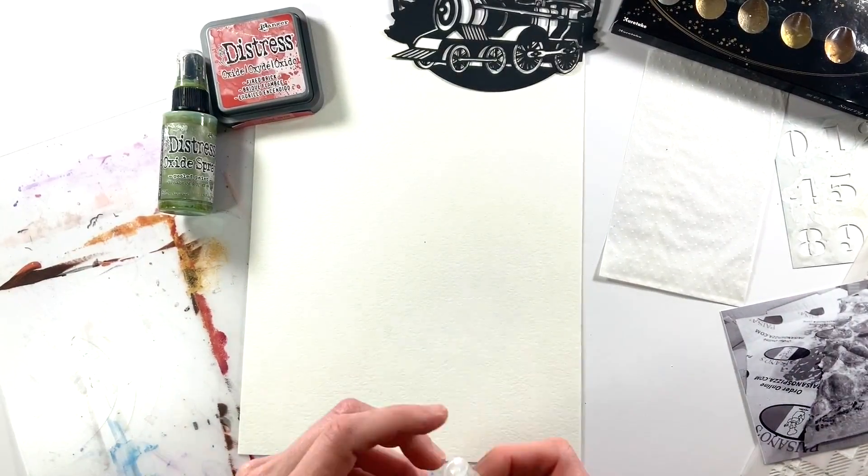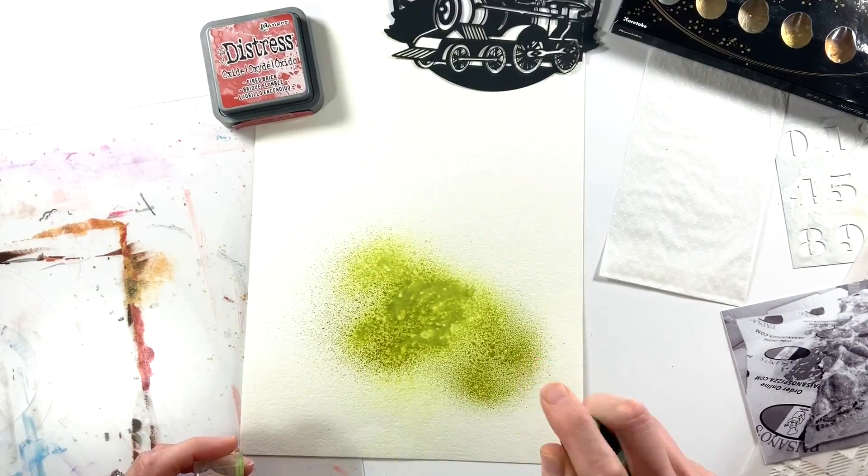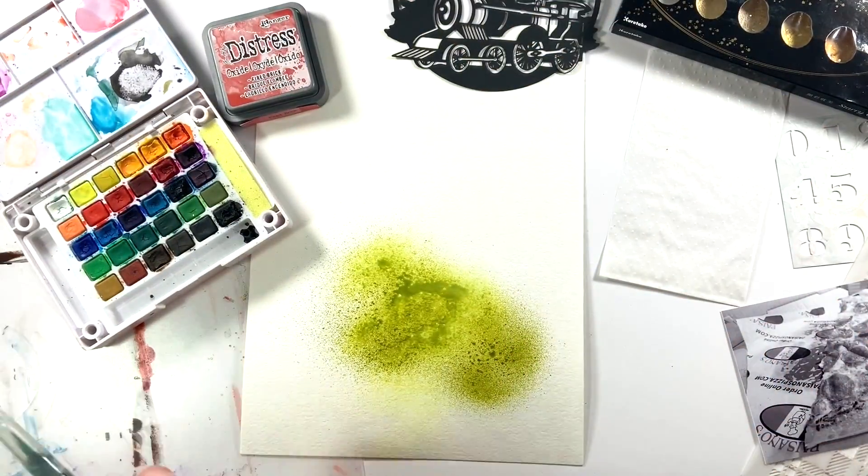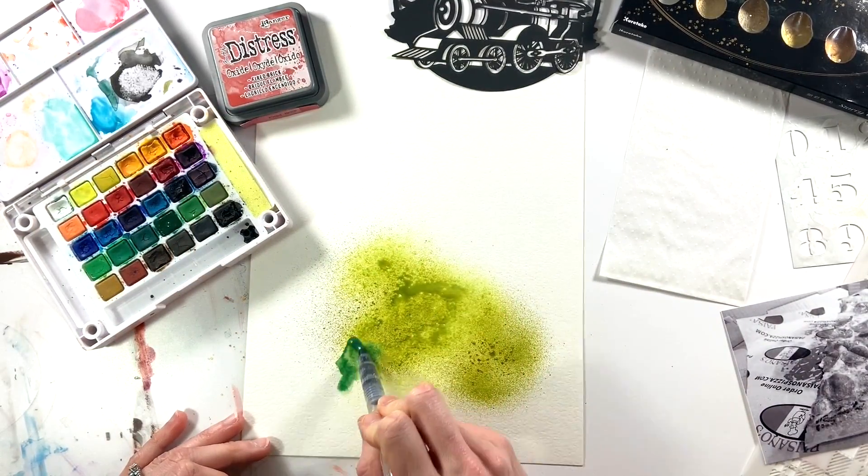I am working on top of watercolor paper and I'm prepping my surface here with just a little bit of water spray and I'm adding some of that distress oxide spray that's in the peeled paint color and I'm going to use some shades of green.